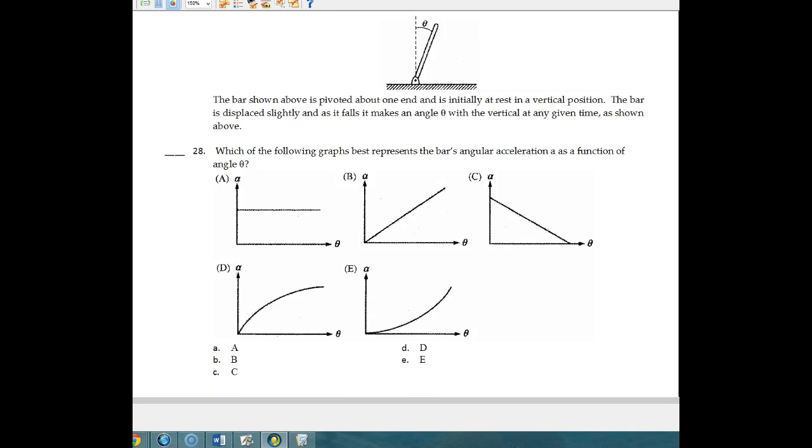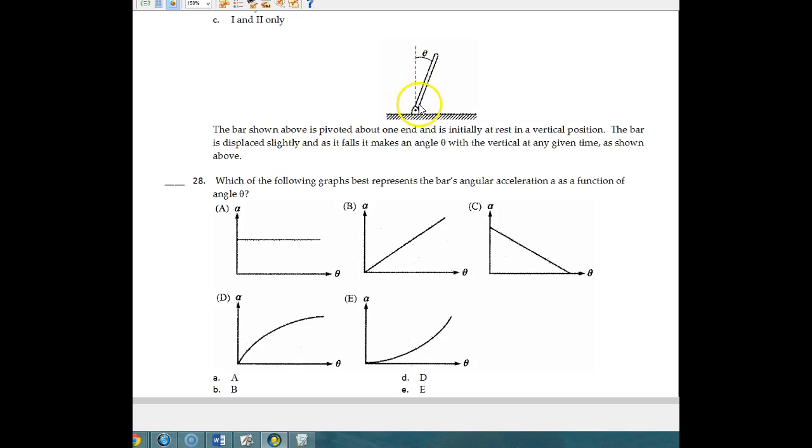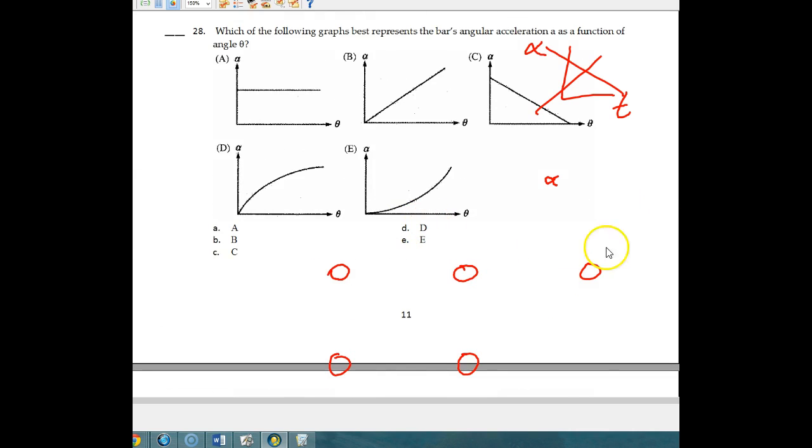So for number 28, what you've got is you've got a bar here that is attached to a pivot, and we know that it's going to fall. So as it falls, it makes an angle that continues to get bigger and bigger with the vertical at any time. And so they want to know which of the following graphs best represents the bar's angular acceleration. A, or angular acceleration should be alpha, as a function of the angle. We're used to doing things versus time. We're not doing that here. Here, we're doing it versus, you'll see that these are all position, angular position. And the relationship between the two is basically a square root relationship. So you should answer D for this one. That's number 28.